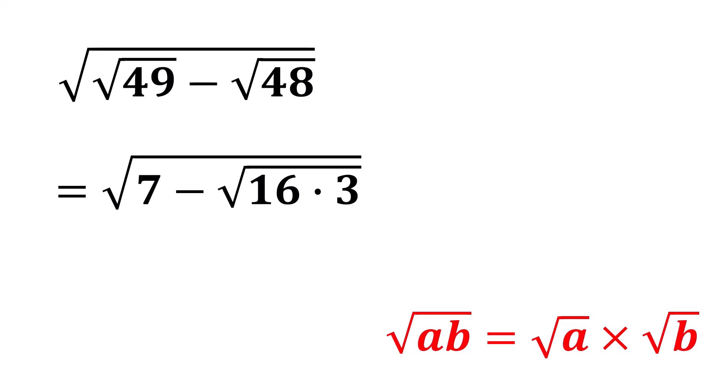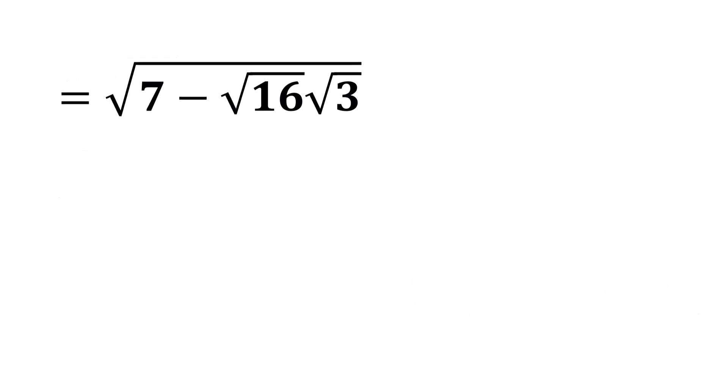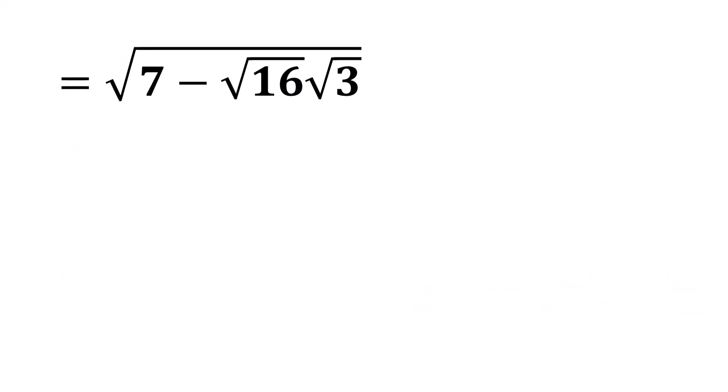we can rewrite our expression as the square root of 7 minus the square root of 16 times the square root of 3. Since the square root of 16 is 4, our expression becomes the square root of 7 minus 4 times the square root of 3.